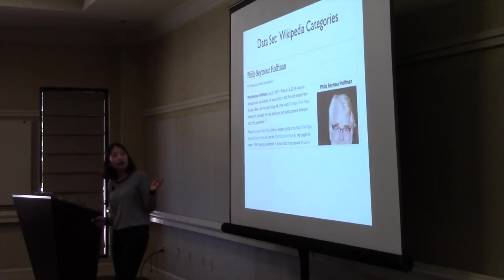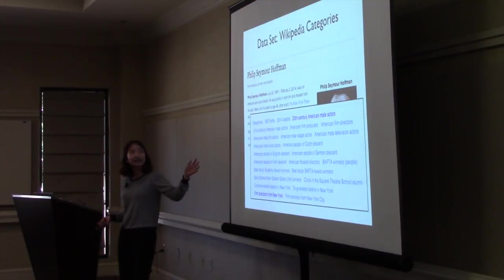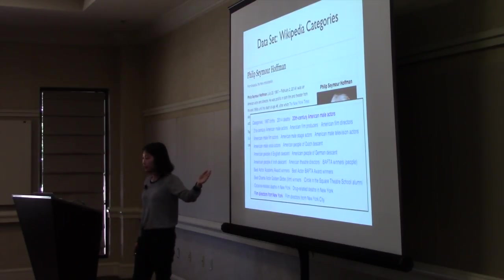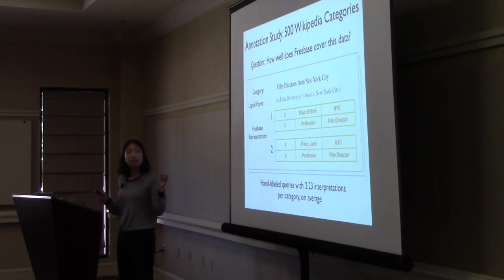So we studied how serious this problem is with the Wikipedia category dataset, which is noun phrases of structured noun phrases of pages that Wikipedia belongs to. If you scroll to any Wikipedia page and scroll down to the bottom, there's a list of categories that this particular entity belongs to. You can see a lot of noun phrases. For example, there are film directors from New York. And we started to map this phrase into the knowledge base, to Freebase. Like here, it's place of birth New York City, profession film directors. We labeled like 500 of these categories and see how well Freebase covered this.